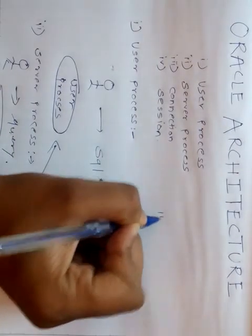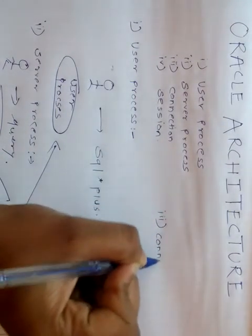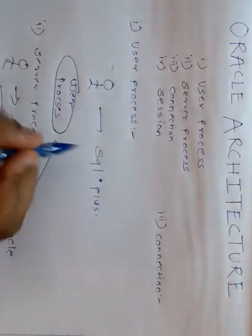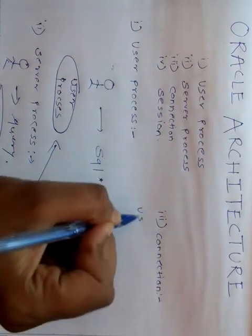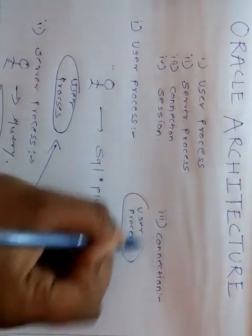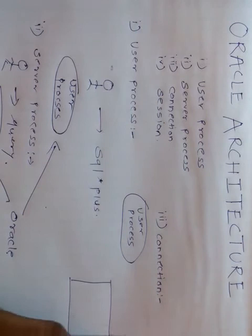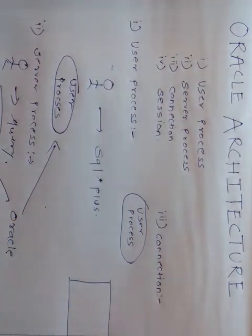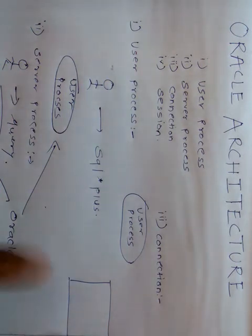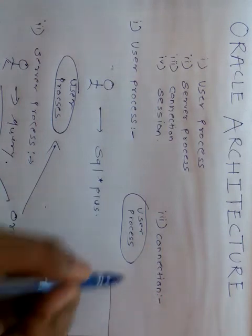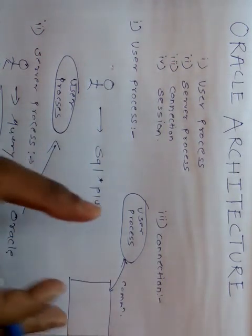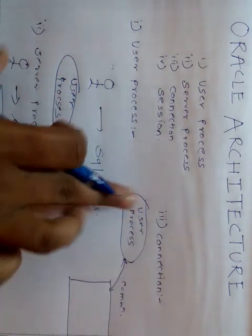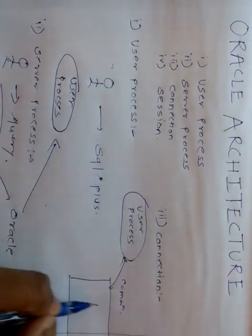The third one is connection. What is the connection? Connection is a communication pathway between the user process and the Oracle instance. In the architecture, the main thing is the Oracle instance. The Oracle instance is a combination of memory structure and the background processes — we will discuss it in the next videos. So the connection is a communication pathway between the user process and the Oracle instance. Whenever the connection between the user process and the instance has been established, this is called a connection.